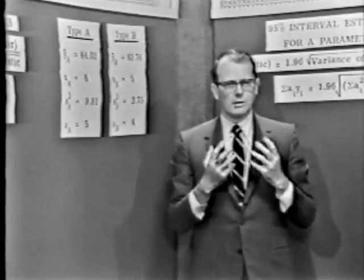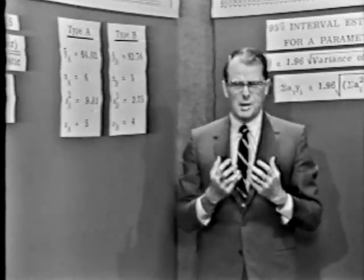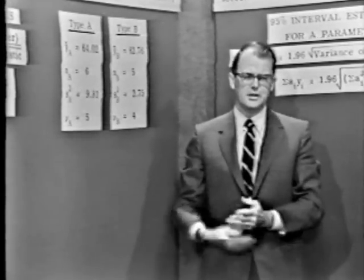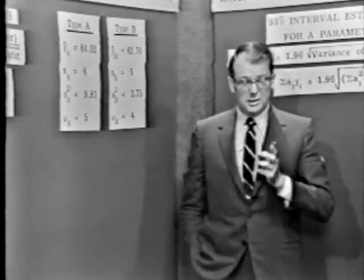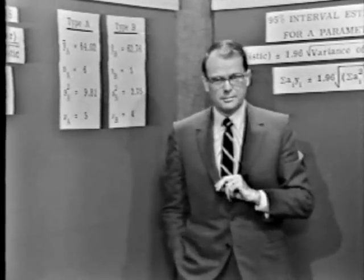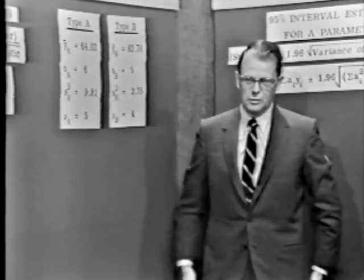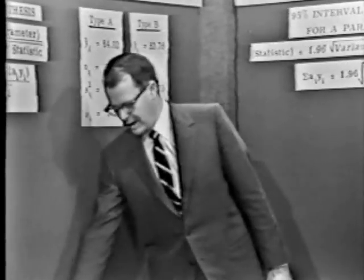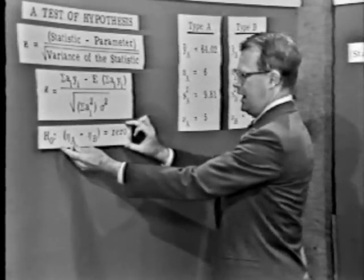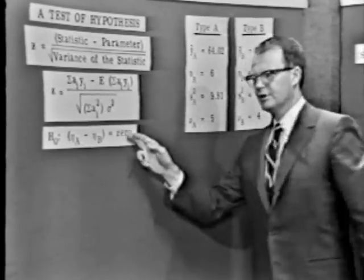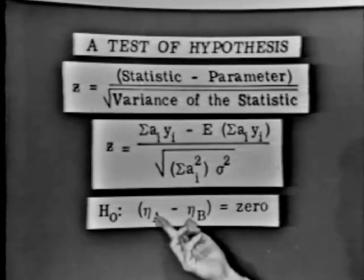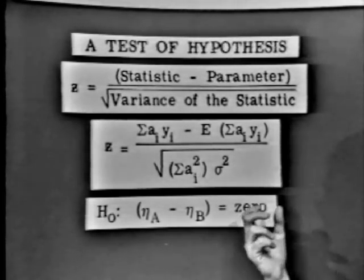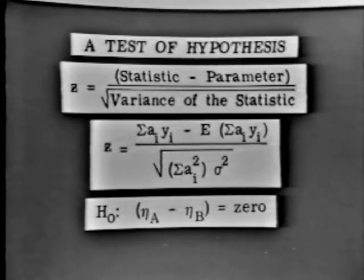Behold our engineer and his problem. He has information on motors of type A and type B, and someone might say there just isn't any difference between type A and type B motors. When we translate that into statistics, we set up a hypothesis: eta_A minus eta_B equals zero. So let's take our data and test this hypothesis — see whether we can contradict or be led to accept this particular hypothesis.